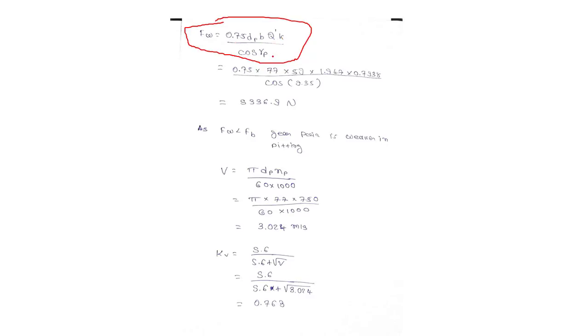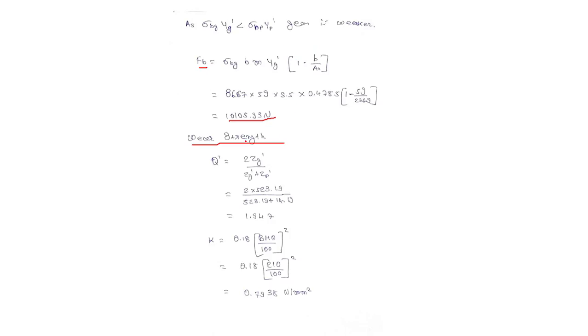Now we have pitch circle diameter of pinion, we have face width, and we have value of gamma p. Now we have to find q dash and k. The equation for q dash is 2 z g dash upon z g dash plus z p dash.